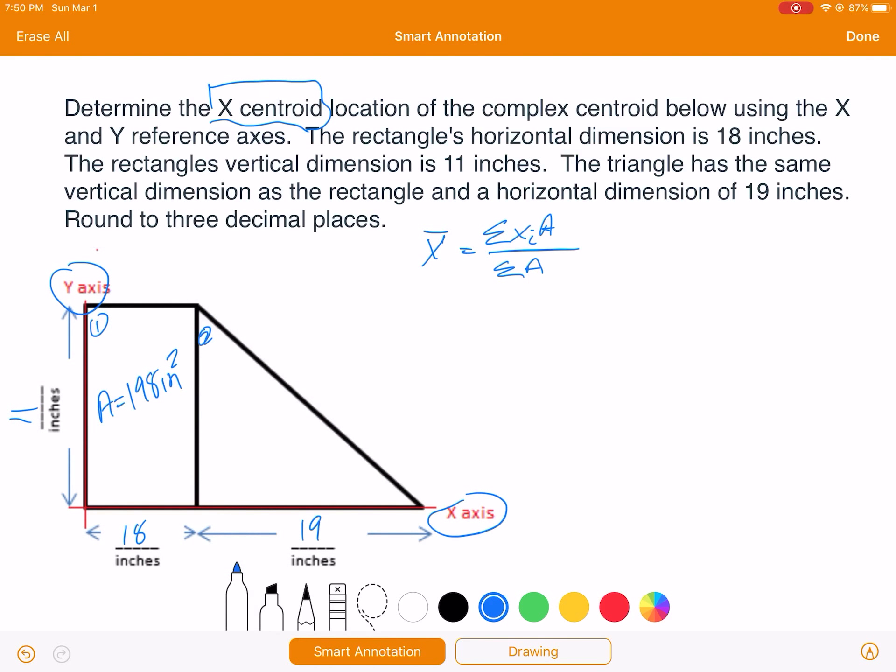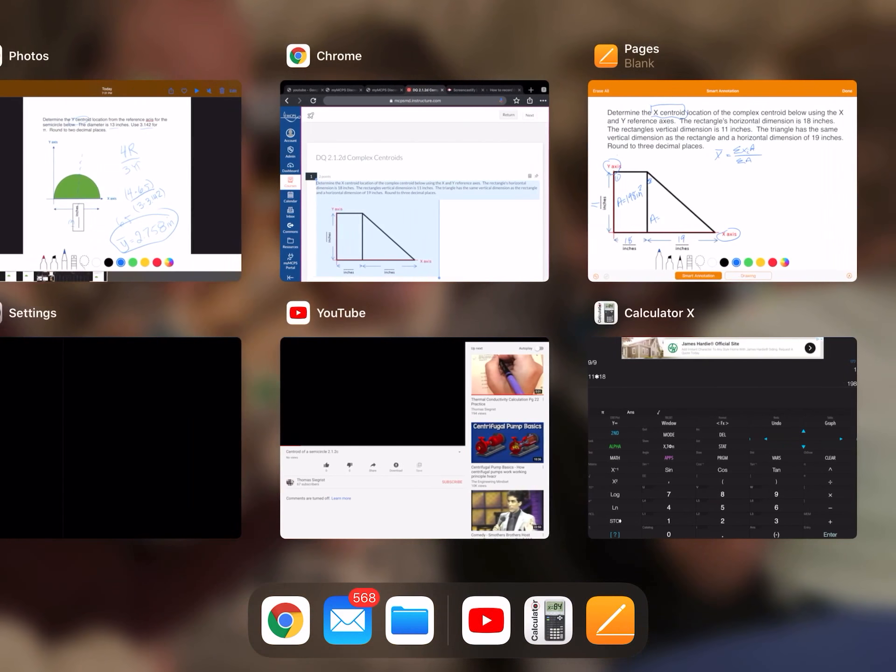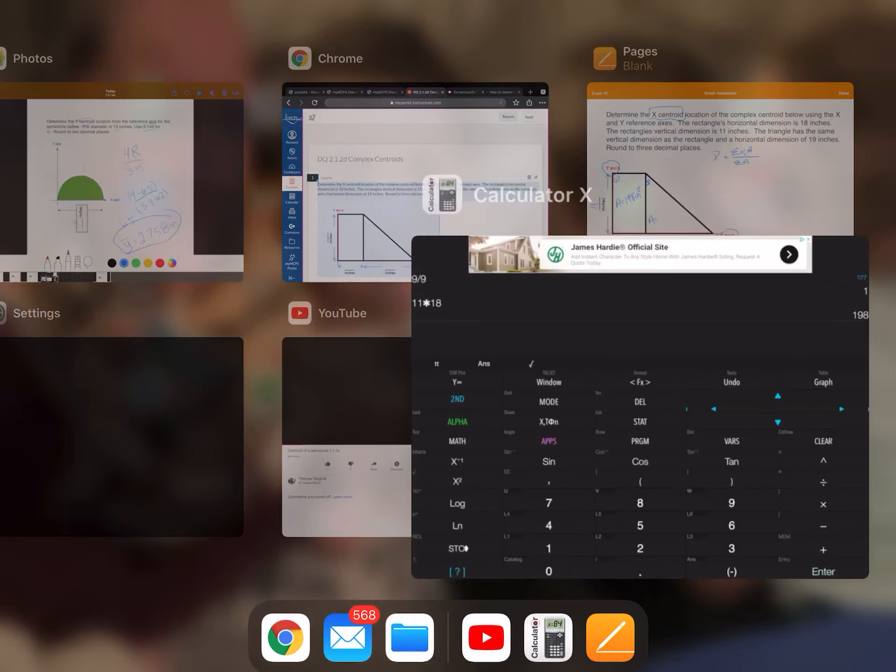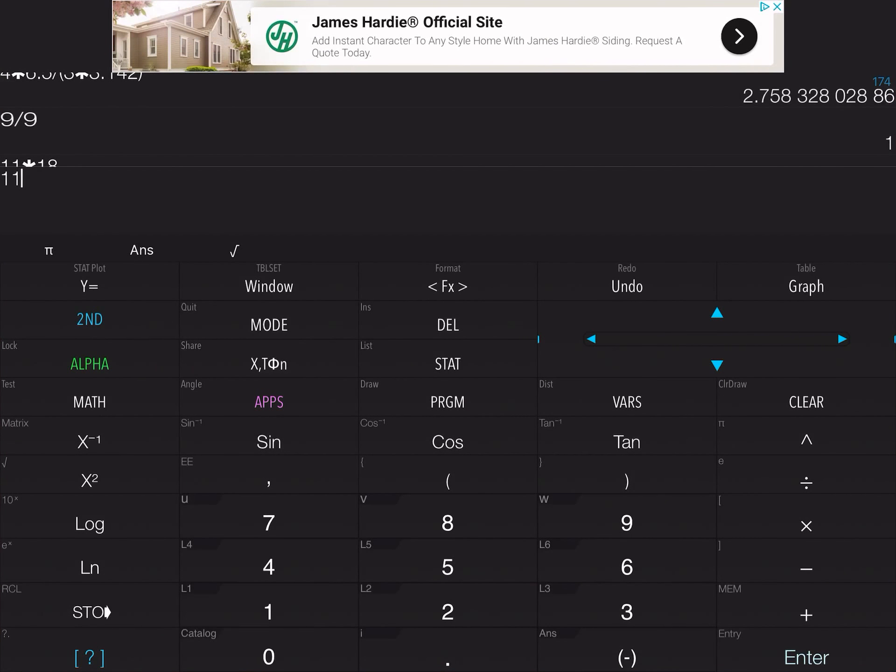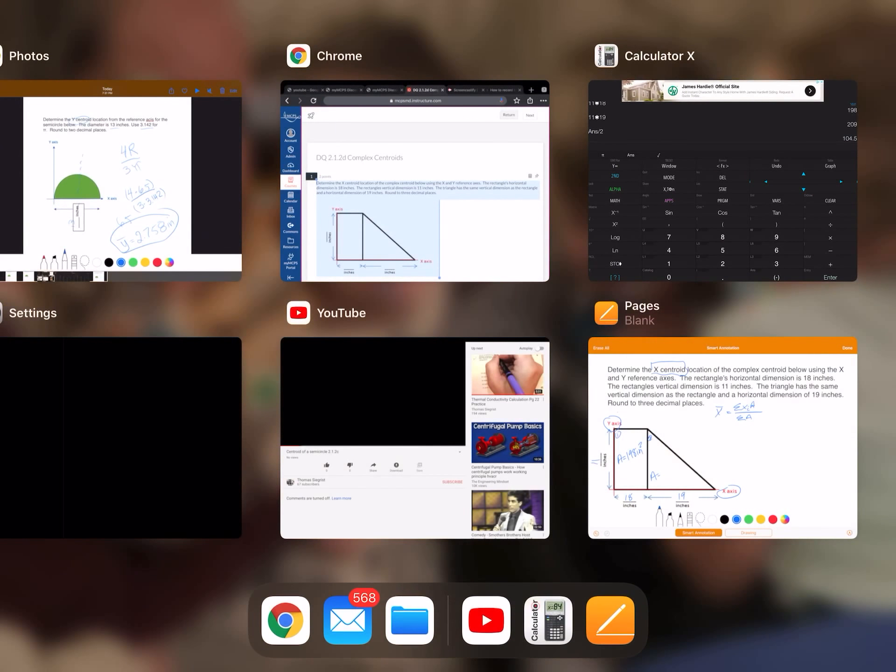And the area of the triangle is one half base times the height, so 11 times 19. 11 times 19 and then divide by 2, it's nice no commercial this time, 104.5, and that's inches squared.